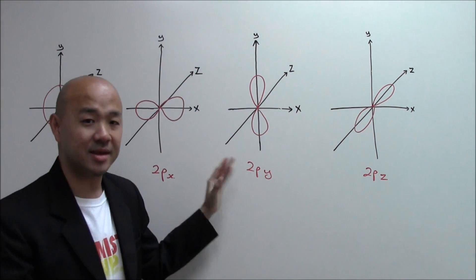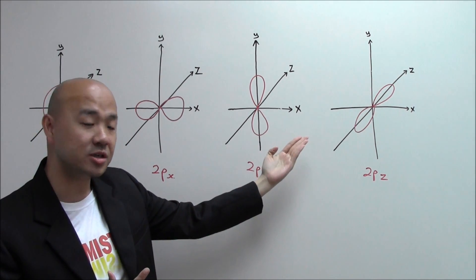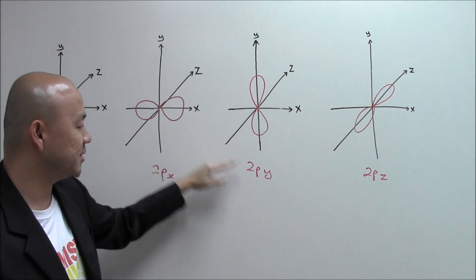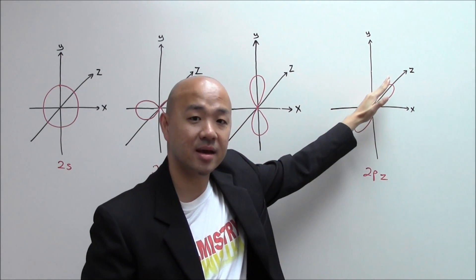The P orbitals, they are dumbbell shaped and how they are being aligned is always in the direction of the axis that they represent. So PX towards the X, PY towards the Y axis, and PZ towards the Z axis. In this case I'm drawing a diagonal.